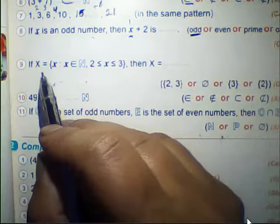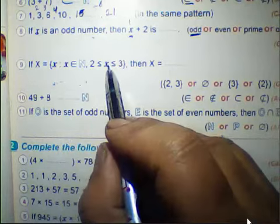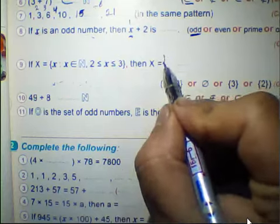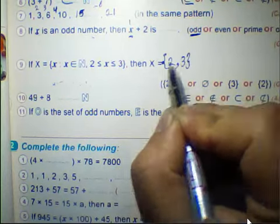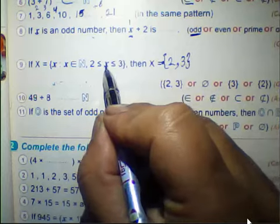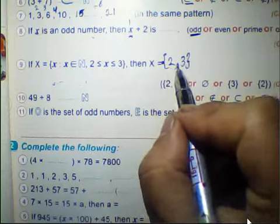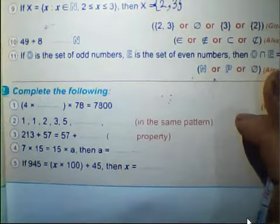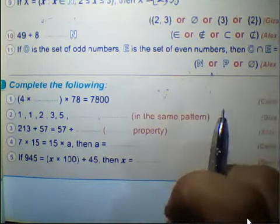If x equals the set of x such that x belongs to N, x is greater than or equal to 2, and x is less than or equal to 3, then x will be the set of 2 and 3. Because x belongs to N and 49 divided by 8 gives a decimal result, which cannot be a natural number. So we write 2 and 3 only.